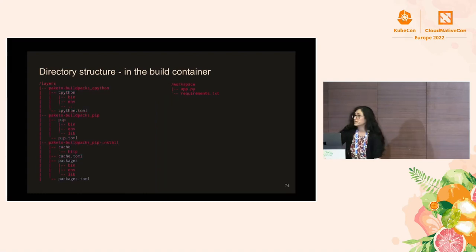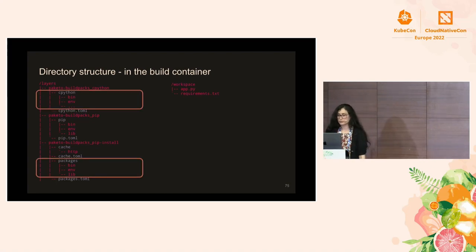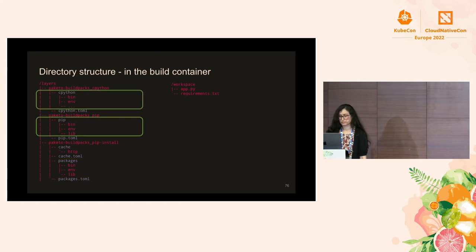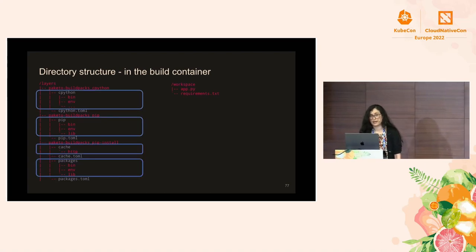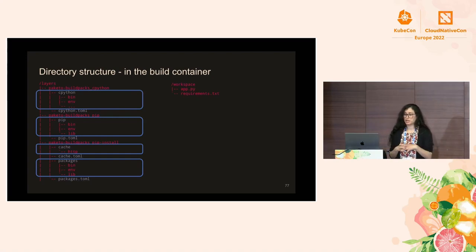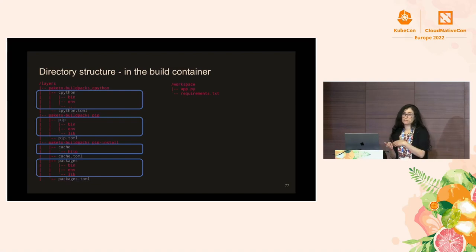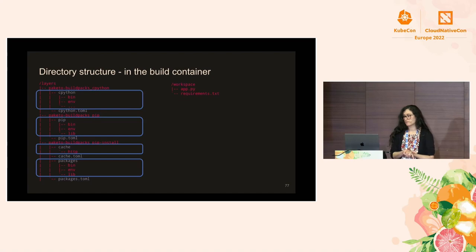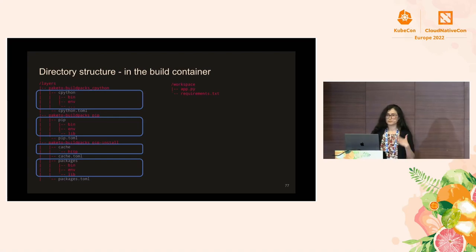Anything in the lib directory is automatically added to the LD_LIBRARY_PATH and LIBRARY_PATH variables — similarly with include and bin — all done automatically by the lifecycle. The Buildpack doesn't have to do anything special. Similarly with PIP, we have a pip layer and update the environment. After pip install runs, it creates a layer for the pip cache and another for the installed packages. To recap: three Buildpacks created four layers — two layers are exported in the final image, two layers are made available to subsequent Buildpacks, and all four layers are cached. No snapshotting was needed because the lifecycle knows exactly where Buildpacks are writing their changes.